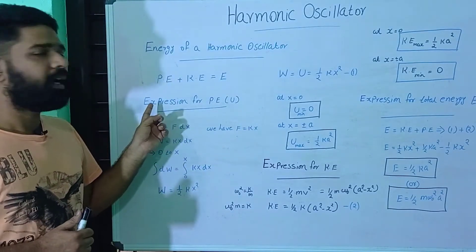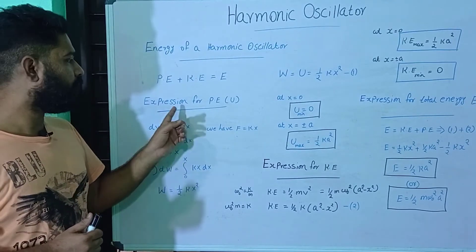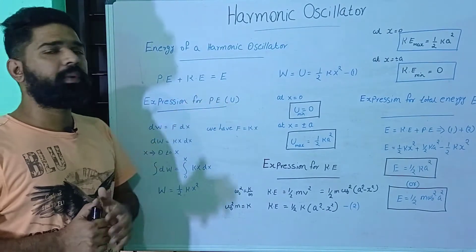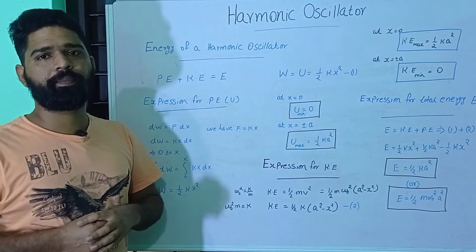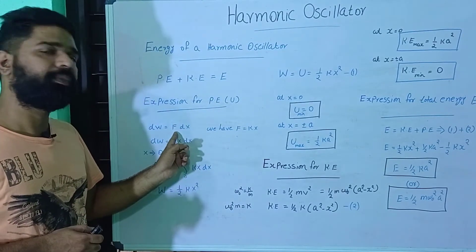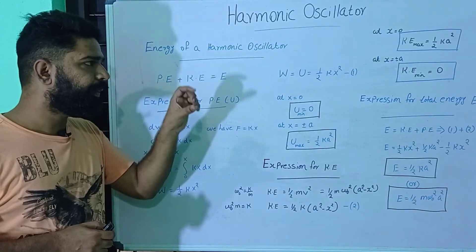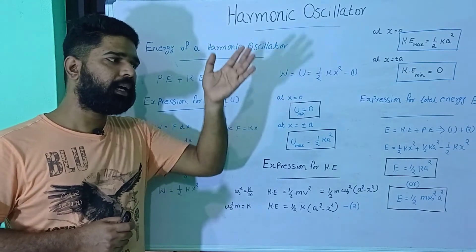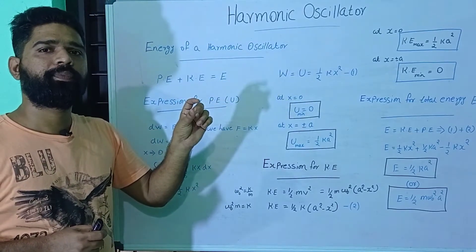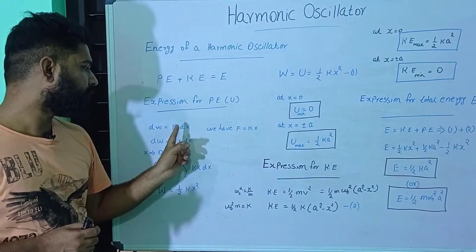First of all let us discuss about the expression for potential energy. Potential energy can be represented by the letter U. If we want to change the potential energy, we can change the work function. Work W is equal to force into displacement. So dW is equal to force into displacement dx, because we are using x displacement. We are using a linear harmonic oscillator, so the displacement is x dx. Force into displacement is work done, so dW is equal to force into dx.